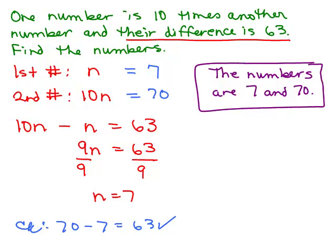I want to make a quick observation here. If I would have done n minus 10n equals 63, I would have gotten negative 7 for n and negative 70 for the second number, and it's true that their difference is still 63. It's just easier for most people to think of the positive numbers 70 and 7. So there might be another way that you might have written this and it wouldn't technically be incorrect.